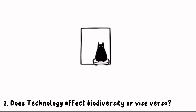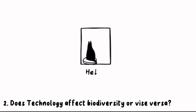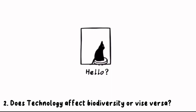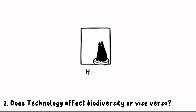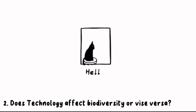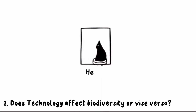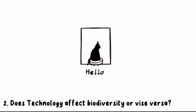Technological advancement can impact biodiversity both positively and negatively. For instance, deforestation and pollution from certain technologies can harm ecosystems and reduce biodiversity. On the other hand, technology can also be used to monitor and conserve biodiversity.